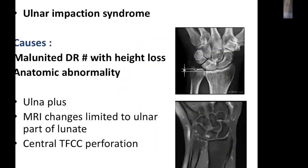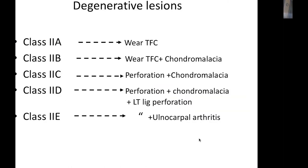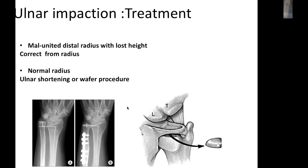Regarding ulnar abutment syndrome, the patient has positive ulnar variance, either anatomical or due to malunited distal radius. MRI is diagnostic when changes are limited to the ulnar side of the wrist, and arthroscopy shows central TFCC perforation. Treatment options include lengthening the distal radius in case of malunion, or shortening the ulna via diaphyseal osteotomy or the wafer procedure.